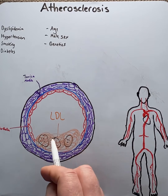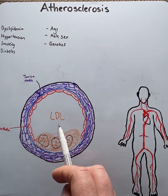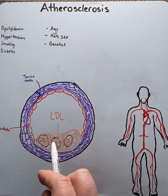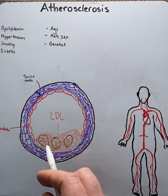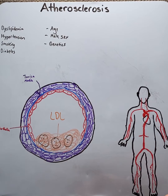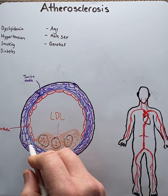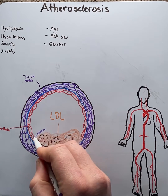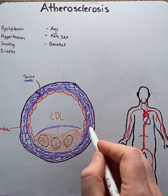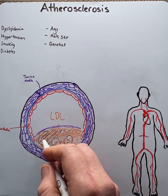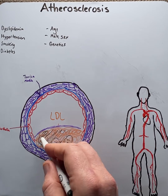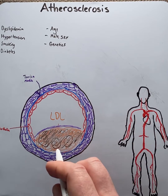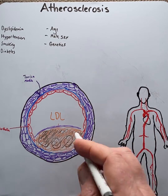Cells like macrophages or smooth muscle cells will try to remove these lipoproteins by engulfing them, thus becoming what we call foam cells. But the LDLs become cytotoxic, which can be exaggerated by smoking, which kills these cells and causes chronic inflammation. Smooth muscle cells will migrate from the tunica media and try to seal off the plaque, whilst the chronic inflammation — which includes calcium — causes the plaque to harden. This is now an advanced plaque.